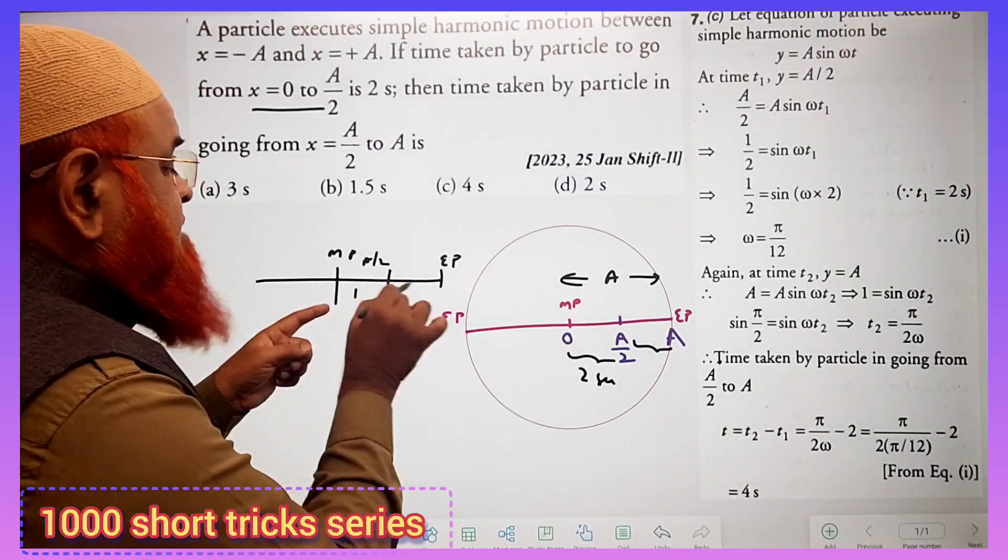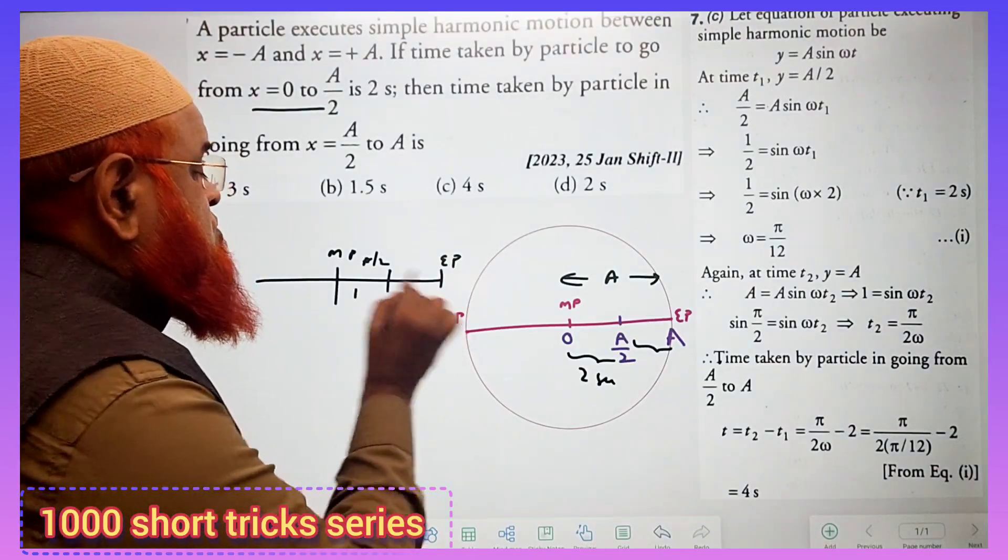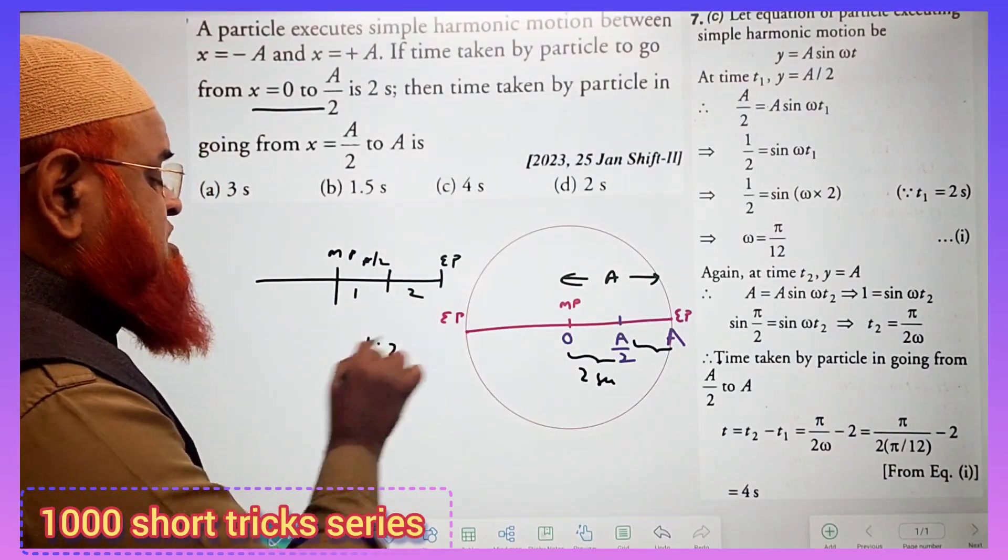So from here to here, the time taken, and from the remaining part, the time taken - the ratio is 1 is to 2. You just remember the ratio is 1 is to 2.